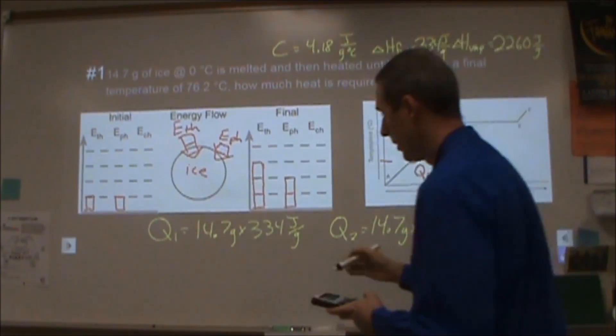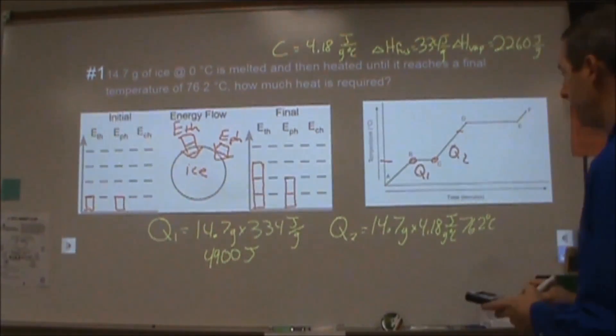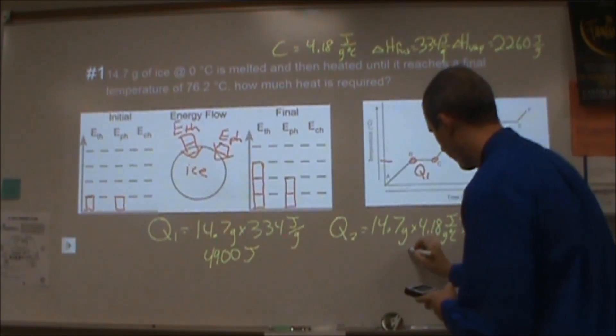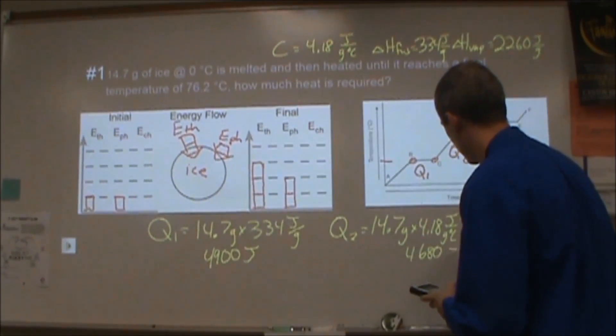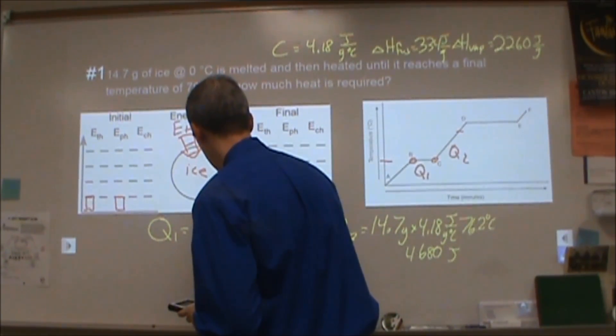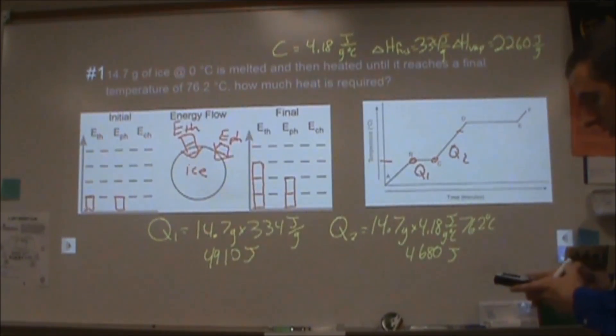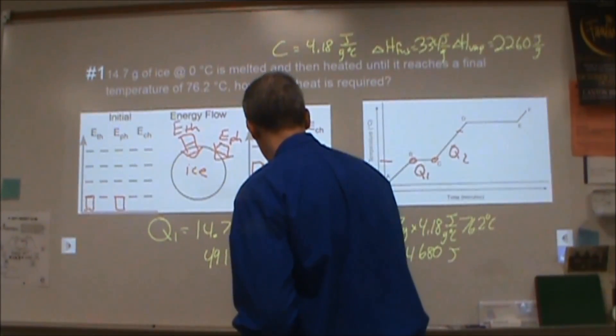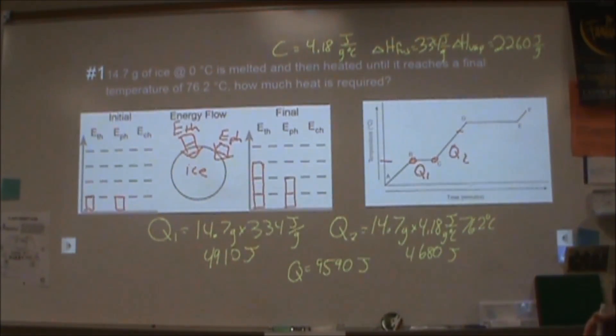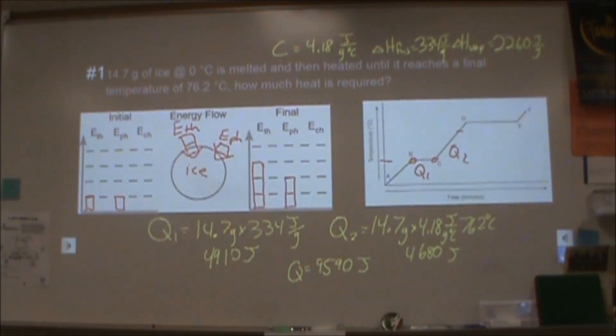So 14.7 times 334, this comes out to be 4910 joules. And the second one is 4680 joules. So then for the total, I would just add those two together, and we get 9590 joules. So for the entire process, the melting takes this much, the heating takes this much, my total then is the sum of those two, which would be 9590 joules.